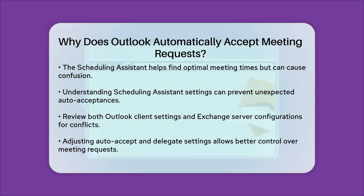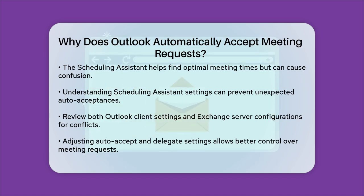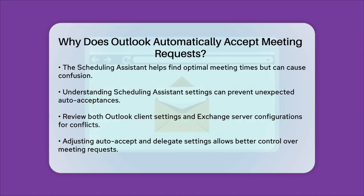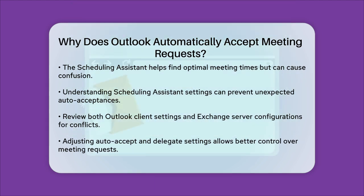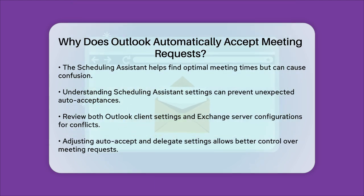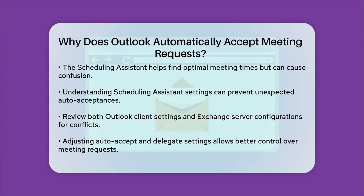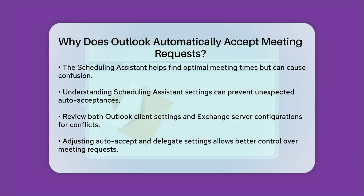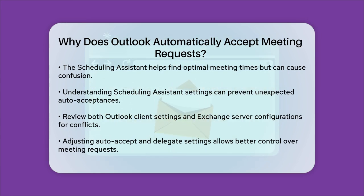In summary, Outlook automatically accepts meeting requests due to specific settings like the automatic accept or decline option or delegate permissions. By checking and adjusting these settings, you can better control how your meeting requests are handled.